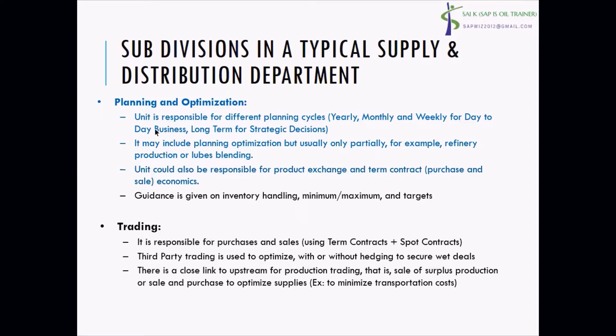Just a quick glance. Planning and optimization unit is responsible for different planning cycles—yearly, monthly, and weekly—for day-to-day business, long-term and strategic decisions. It may include planning optimization, but usually only partially. For refinery production or loop blending, the unit could also be responsible for product exchange and term contract economics.